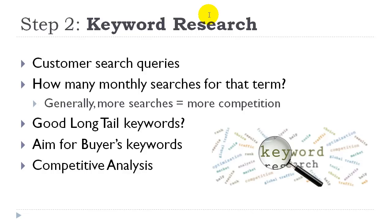How we go about keyword research is we want to look at how many monthly searches that term actually gets. Generally, if there are lots and lots of searches — anything more than 10,000 searches a month — that is deemed very competitive and I'd probably avoid that. If you have a term that's really competitive, you'll generally find big companies ranking for it and you don't want to go against them. It's not impossible to rank higher than big brands, but it's going to take a lot of time and resources. We just want to make these websites as quickly as we can and rank them as fast as we can — that's the main goal.